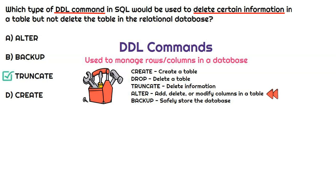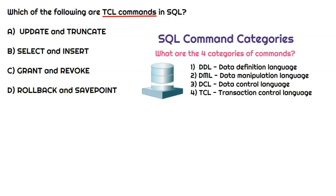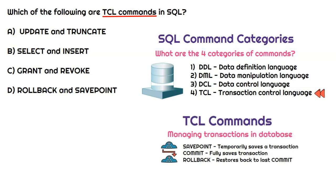In this question we're focused on TCL commands in SQL. TCL stands for transaction control language — one of our four categories of commands — and it's used for managing transactions. The three common TCL commands are savepoint, commit, and rollback. Rollback restores the database to the last commit, which is basically the last hard save. Savepoint temporarily saves a transaction while you're working on it, until you use the commit command to fully save it. The correct answer here is rollback and savepoint.